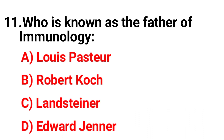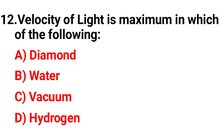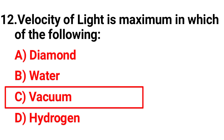Question eleven: Who is known as the father of immunology? The correct answer is option A, Louis Pasteur. Question twelve: The velocity of light is maximum in which of the following? The correct answer is option C, vacuum.